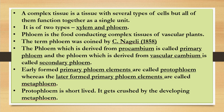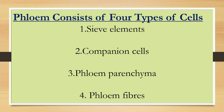Protophloem is short-lived because it gets crushed by the developing metaphloem. Phloem contains four types of cells: sieve elements, companion cells, phloem parenchyma, and phloem fibers.